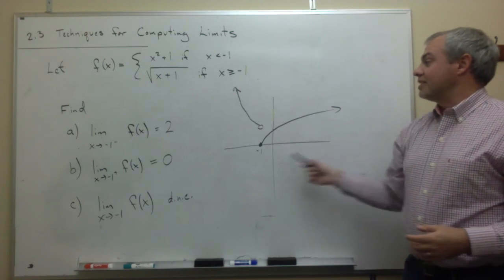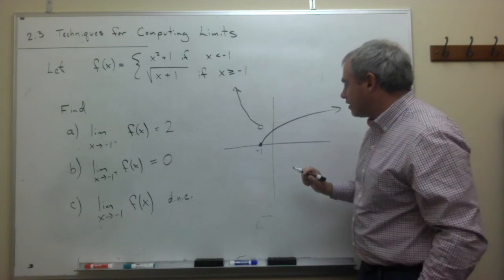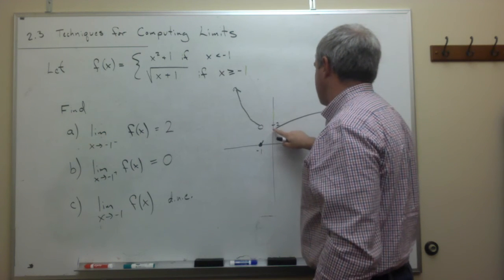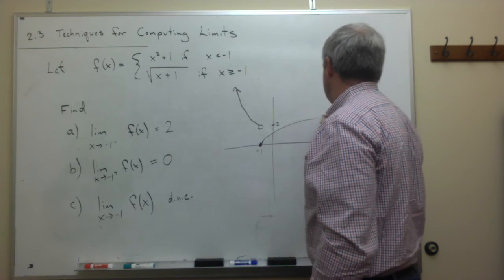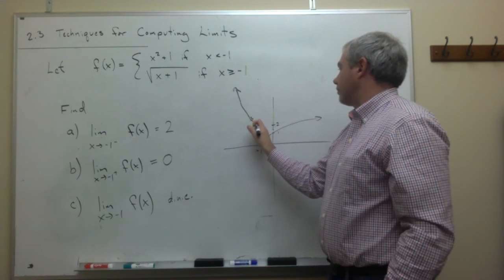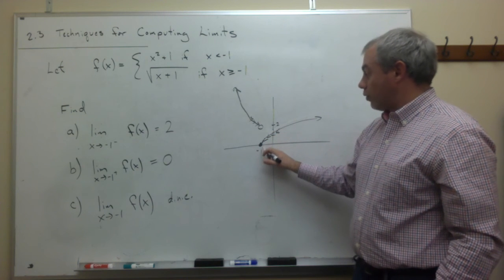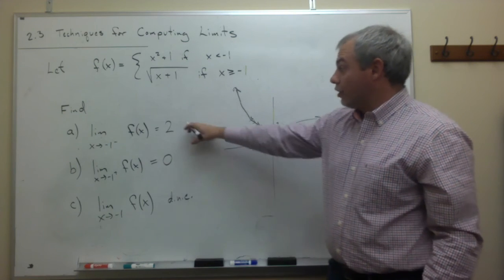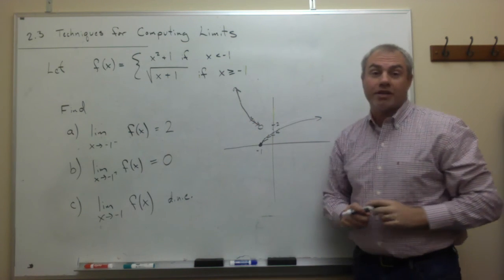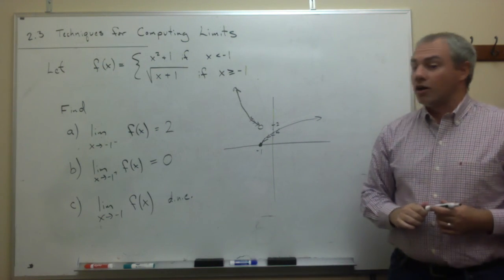Looking at the graph: as x approaches minus 1 from the left, we're getting close to a y-value of 2. As we come in from the right, we're getting close to 0. Those two values don't equal each other, so the limit at this point does not exist — the graph makes a jump right at x equals minus 1. That's how we compute these limits on problem number 33.